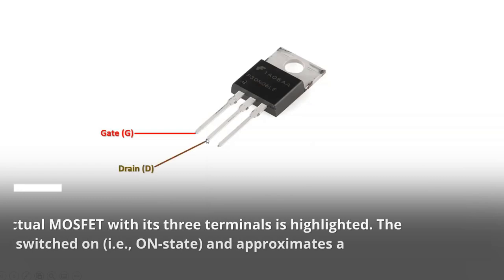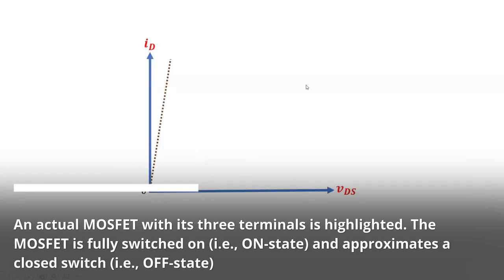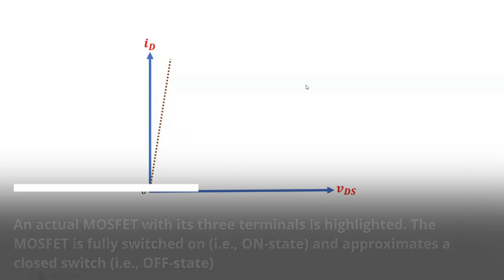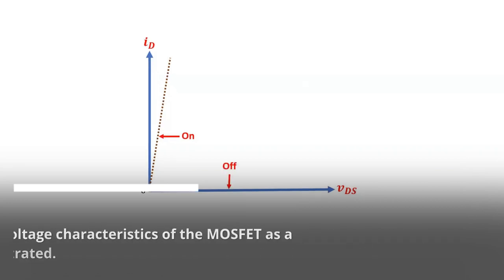An actual MOSFET with its three terminals is highlighted. The MOSFET is fully switched on, i.e. on state, and approximates a closed switch, i.e. off state, when the gate source voltage is below the threshold value of the device. Therefore, the device is operated as a switch.